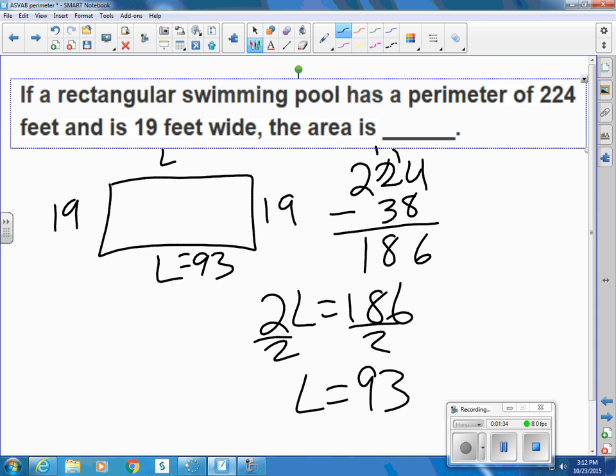So to find the area of that thing, we know that we take the length times the width. So it'll be 93 times 19. That turns out to be 1,767 square feet. That's the area.